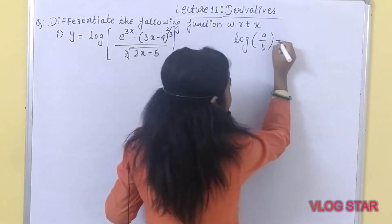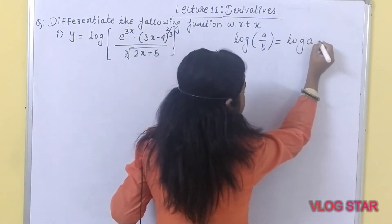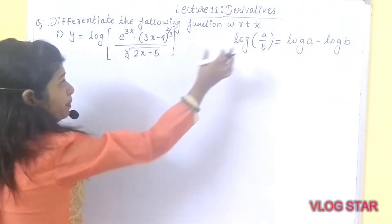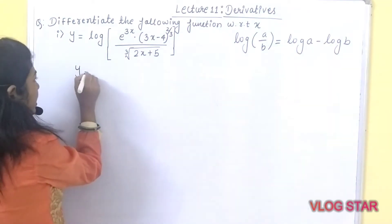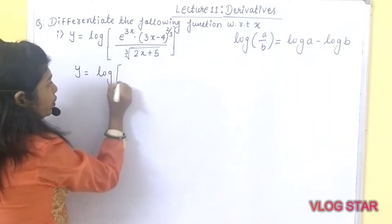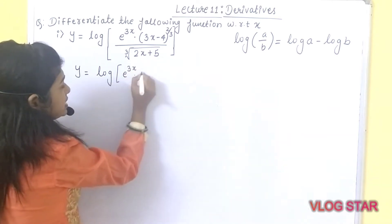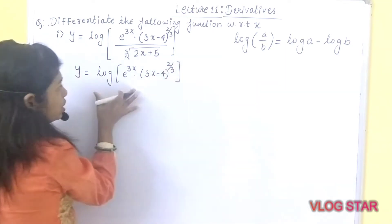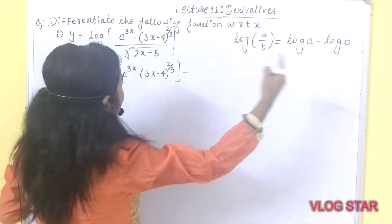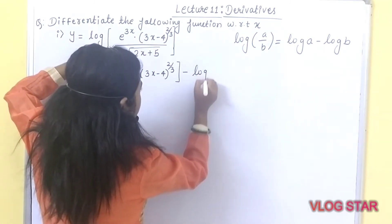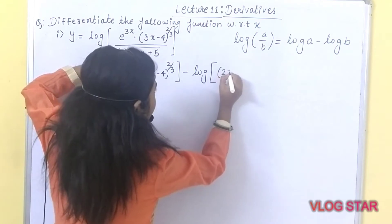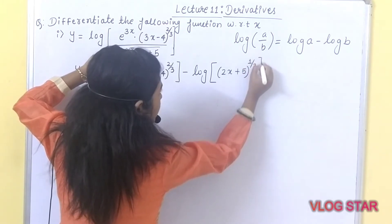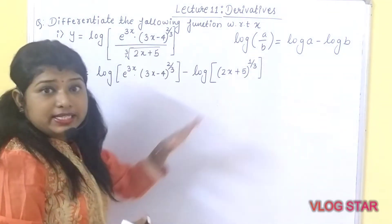Log of a upon b can be given by log a minus log b. Simply you need to apply this formula. So you will be getting y is equal to log of the numerator, which is e raised to 3x into (3x minus 4) raised to 2/3, minus log of the denominator. Log b is log of the denominator, which we can write as (2x plus 5) raised to 1 upon 3.